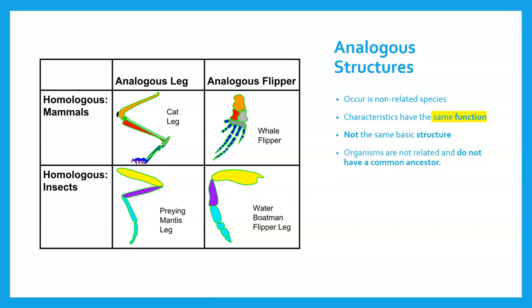With analogous structures, it shows organisms are not related and they don't have a common ancestor. The praying mantis and the cat don't have a common ancestor, even though they have legs. When we look at the flippers, we've got a whale's flipper and a water boatman's flipper - very different in structure, but they both do the same thing. The table also shows homologous examples: the cat leg and whale flipper have similar structure but completely different functions, and the praying mantis leg and water boatman flipper have similar structures but different functions.